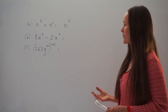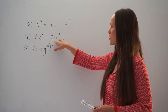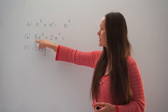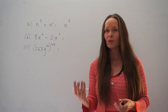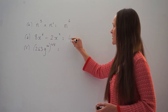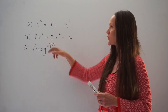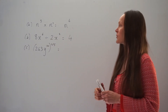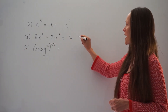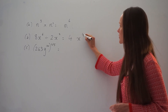In part B, we have to work out 8x to the power of 6 divided by 2x squared. Remember, you start by dividing the numbers 8 and 2 as you would usually, so 8 divided by 2 is 4. Next, since we're dividing, we subtract the powers on the x's. So 6 take away 2 is 4, and the answer is 4x to the power of 4.